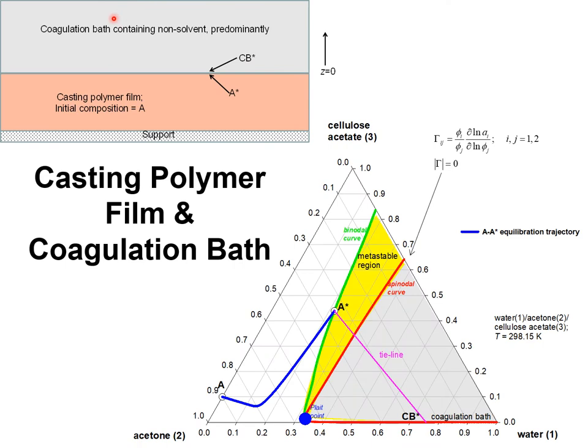This is a schematic of the immersion precipitation process in which a thin layer of casting film consisting of a mixture of acetone and cellulose acetate is brought into contact with a coagulation bath containing a non-solvent, typically water.